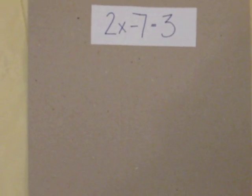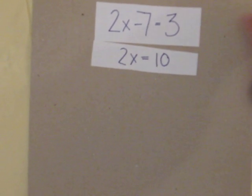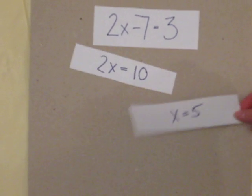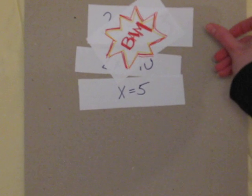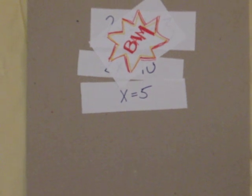We add 7 to both sides of the equation to get 2x equals 10, and then divide both sides by 2. Bam. x equals 5. We know how to do that.